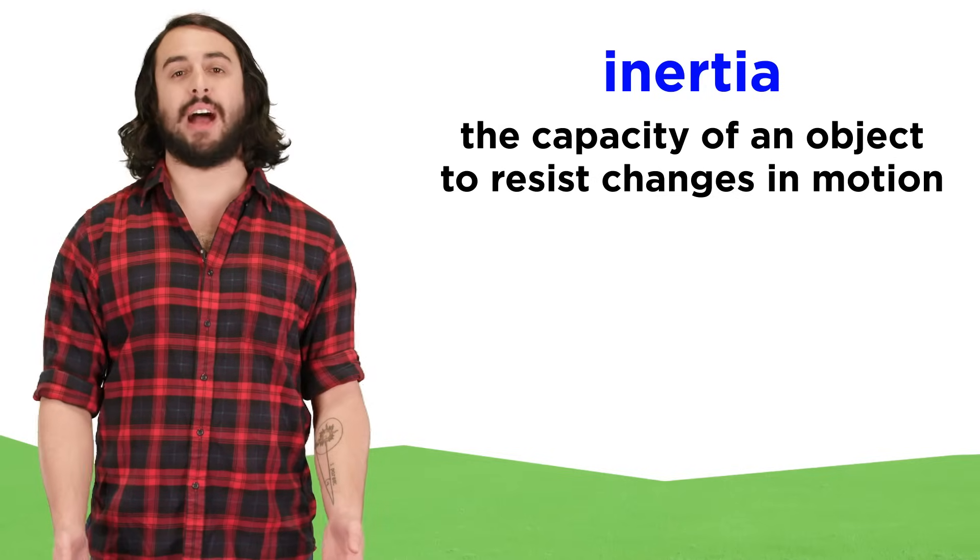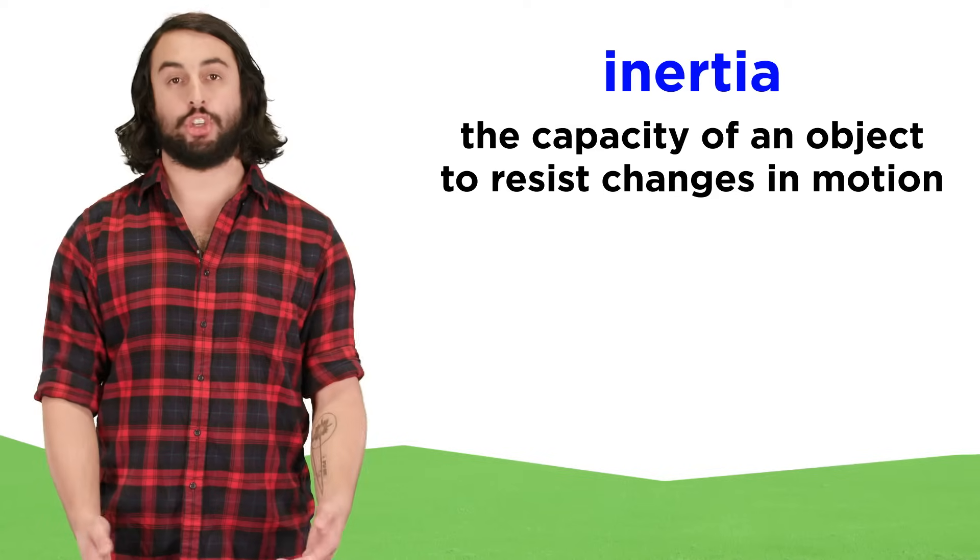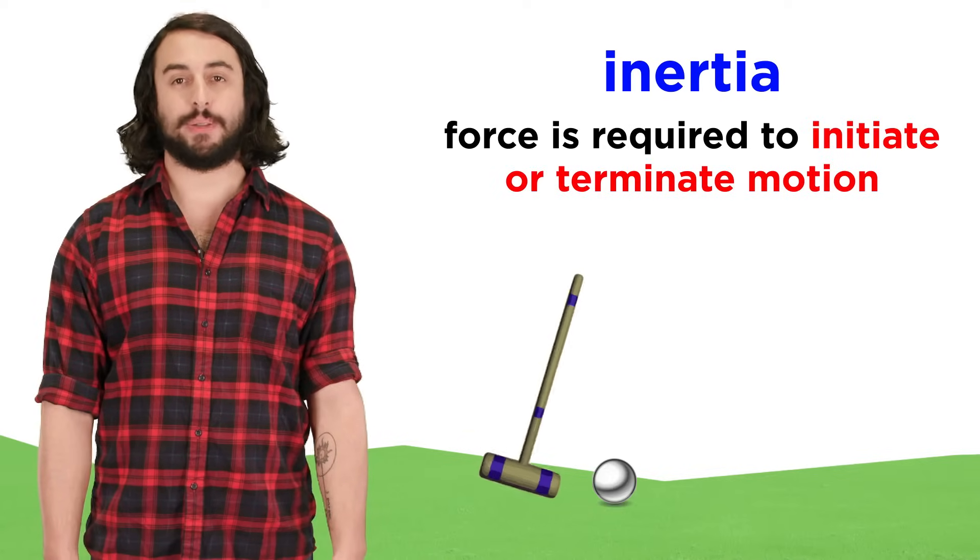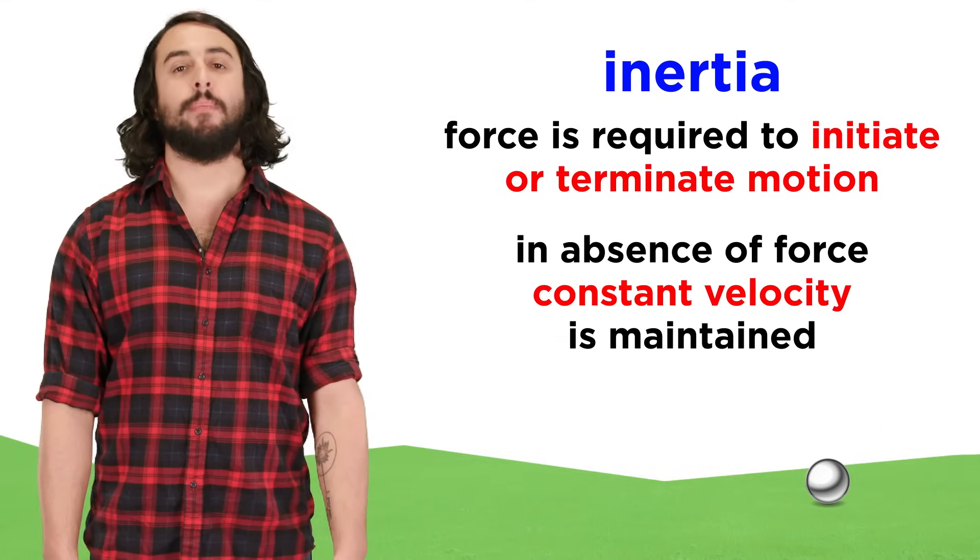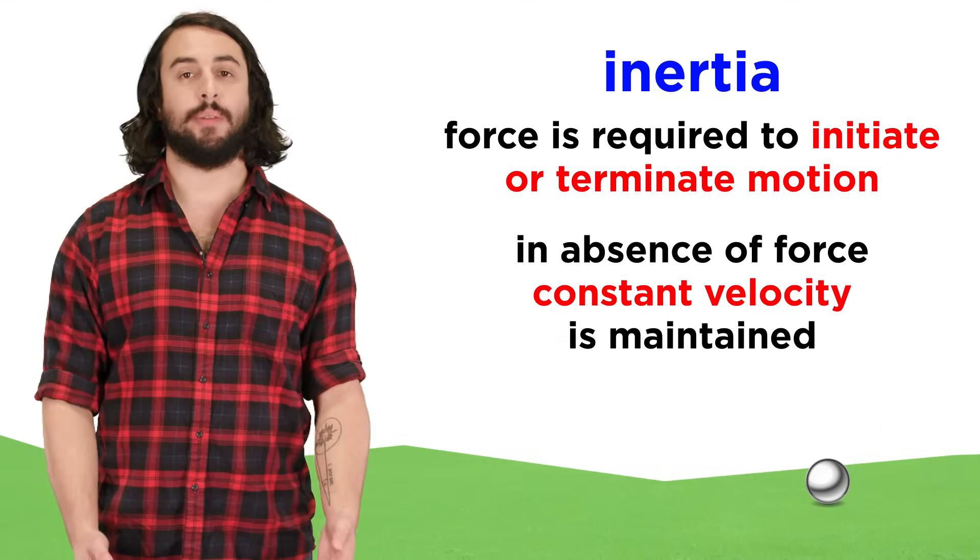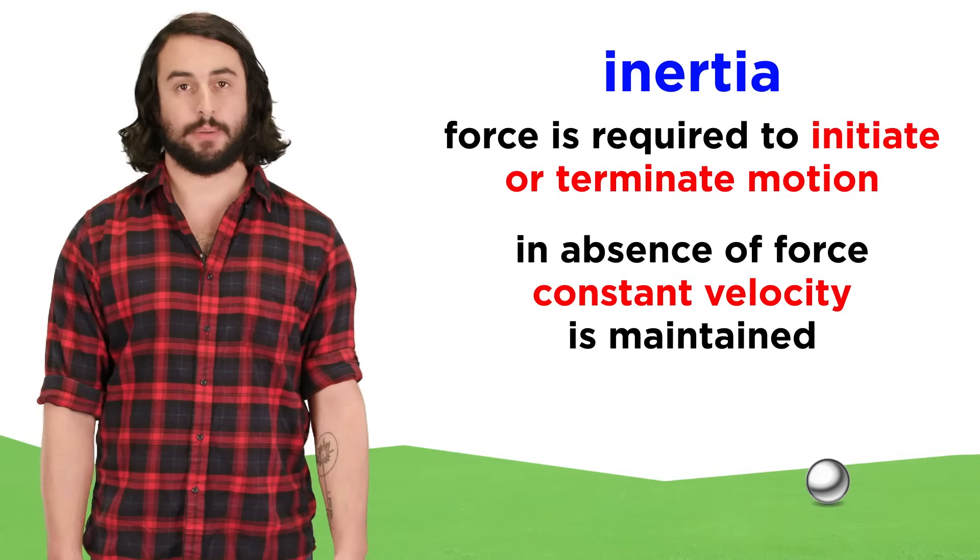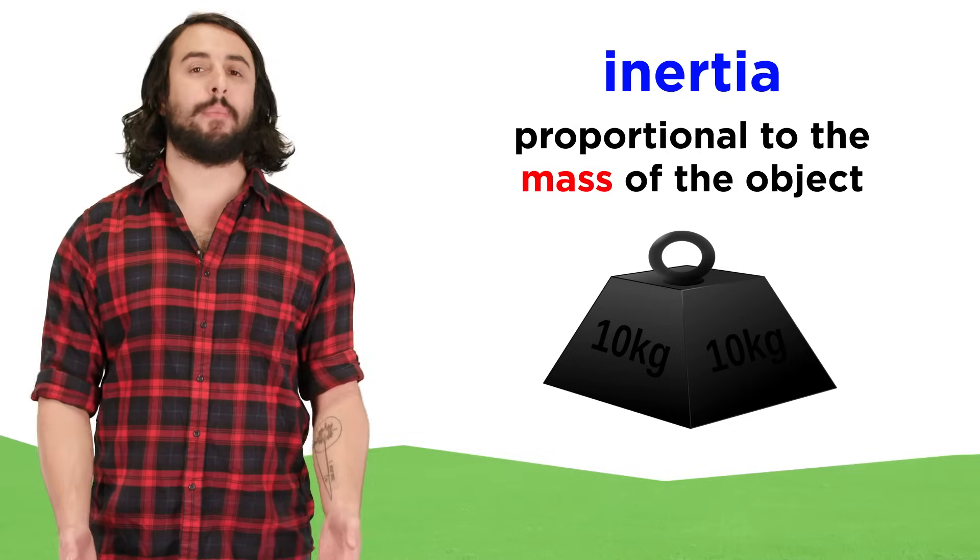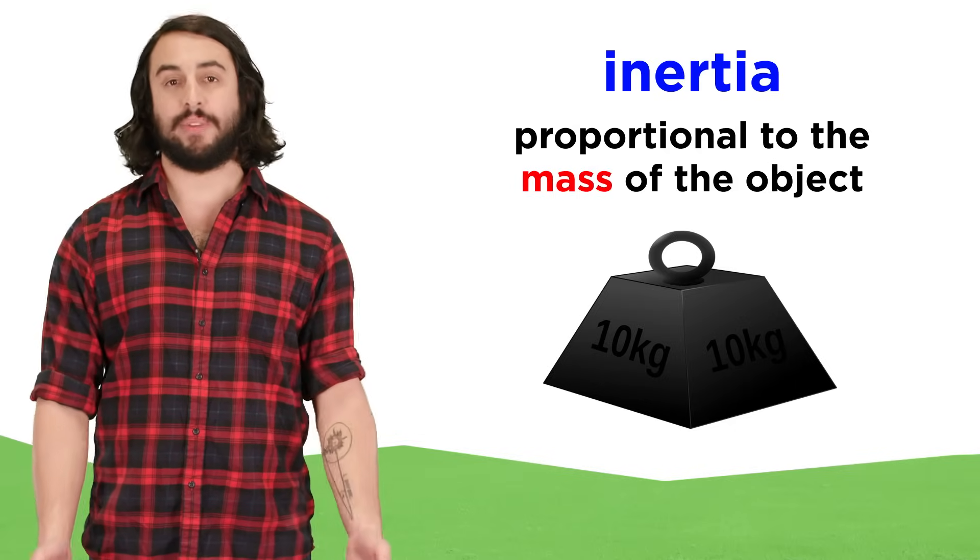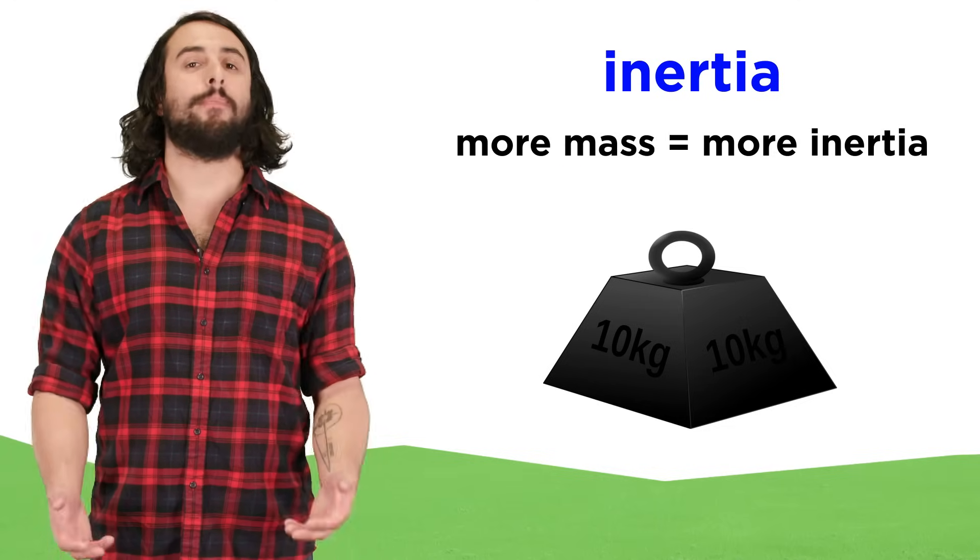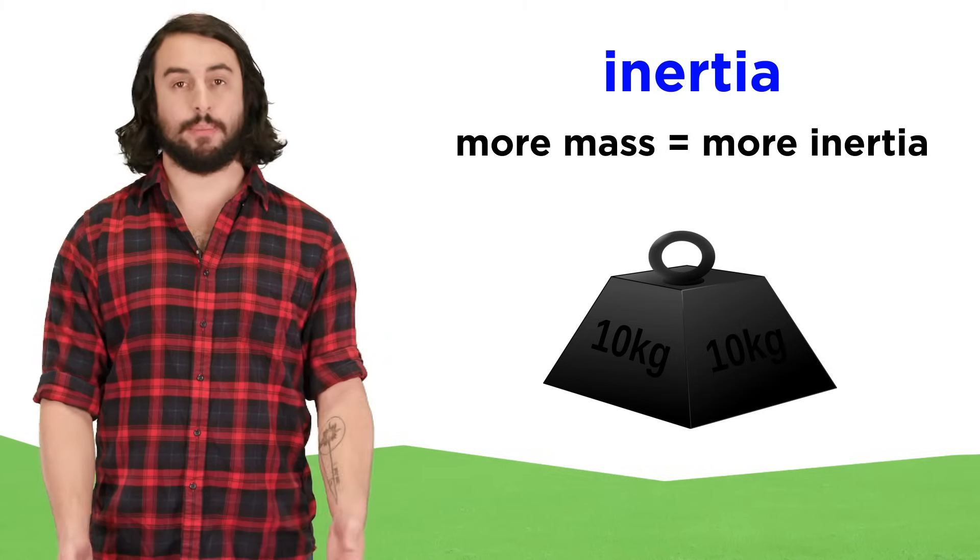The capacity of an object to resist changes in motion is called its inertia. Force must be applied to get an object moving, and again to slow it down to a stop. Only motion with constant velocity, including zero velocity, requires no application of force. An object will have some amount of inertia that is proportional to its mass, a scalar value measured in kilograms. More massive objects have greater inertia, or greater resistance to motion.